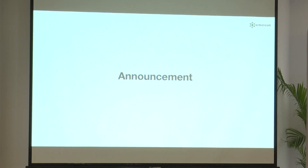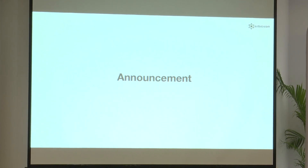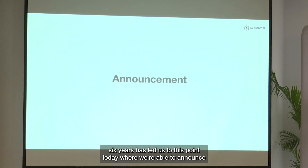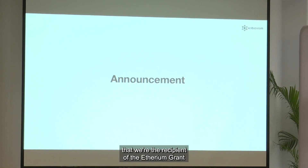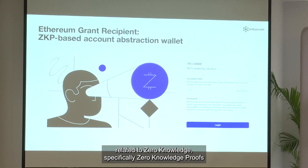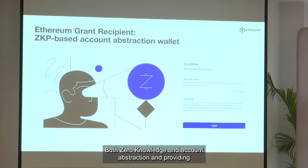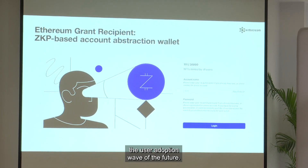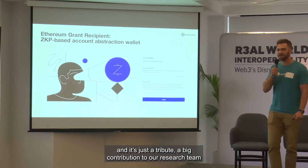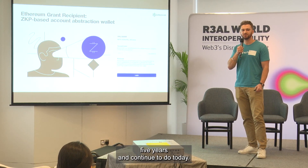Now for an announcement — our cutting-edge research and innovation over the past six years has led us to this point. We are the recipient of an Ethereum grant related to zero knowledge — specifically zero-knowledge proof-based account abstraction wallets. We see both zero knowledge and account abstraction as big drivers of the future user adoption wave. We're really excited to announce this today, and it's a tribute to our research team and the innovation we've had over the past five years.